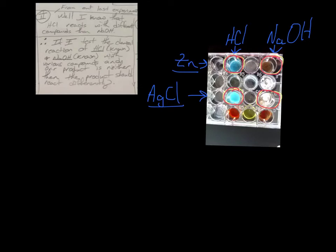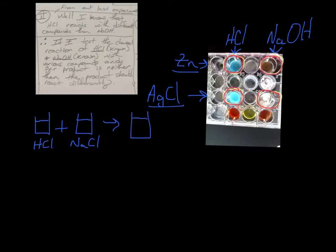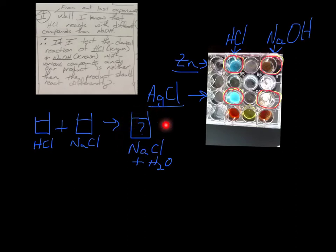Their idea starts the same way: they're taking HCl and mixing it with NaOH, and their question is did this produce something new — is it sodium chloride and water? Their hypothesis says: if HCl mixed with zinc makes this result, and NaOH mixed with zinc makes that result, and HCl mixed with silver chloride makes this, and NaOH mixed with silver chloride makes that — then if the product is neither hydrochloric acid nor sodium hydroxide, when we mix it with zinc or silver chloride, we should get something completely different from any of those.